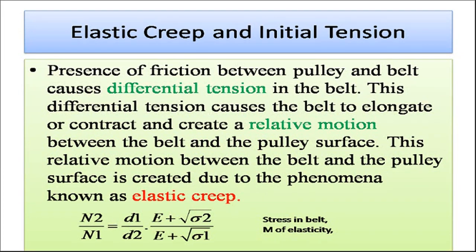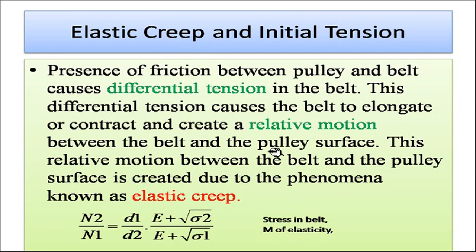To understand elastic creep, consider that the presence of friction between the pulley and the belt causes differential tension in the belt. This differential tension causes the belt to elongate and contract, creating a relative motion. There is tension on the tight side and tension on the slack side — two different tensions. This differential tension causes elongation and contraction and therefore creates a relative motion between the belt and the pulley surface. This relative motion is known as elastic creep.